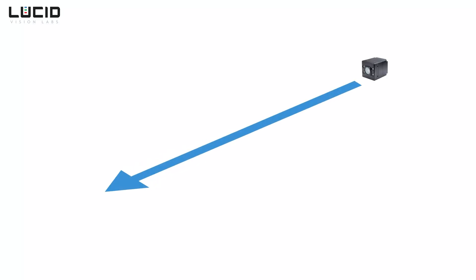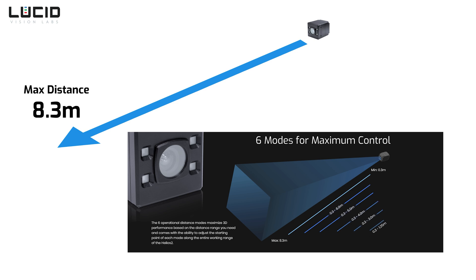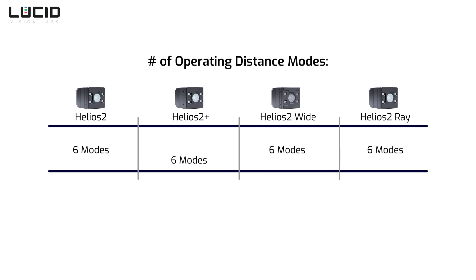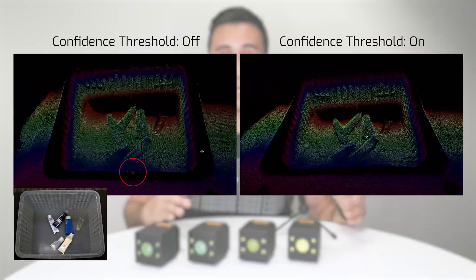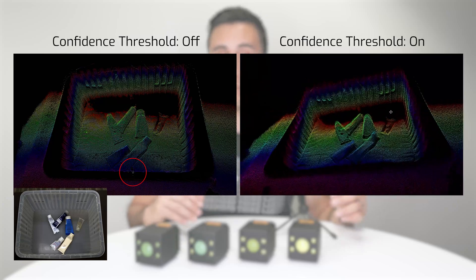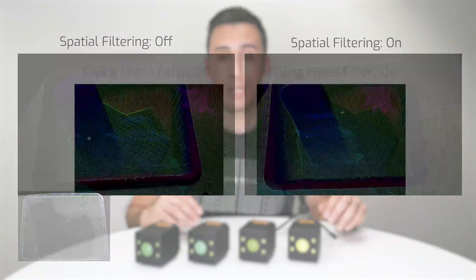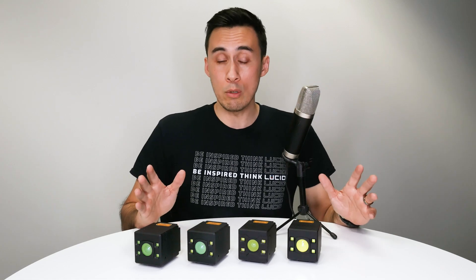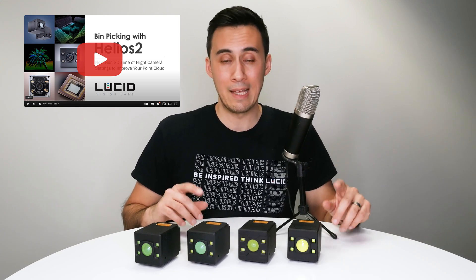All models have an 8.3-meter maximum depth distance, and you can manually offset the starting minimum distance for all models. All models also have six distance modes, with the Helios II Plus being the exception — it has an additional three modes for HDR imaging and three modes for high-speed imaging. For filtering controls, you have confidence threshold, which defines what reliability level a 3D point needs to be shown; spatial filtering, which smooths out bumps and dips in object shape; and flying pixel filter, where you define the distance threshold to remove flying pixels. Links to real-world filter examples are in the description below.